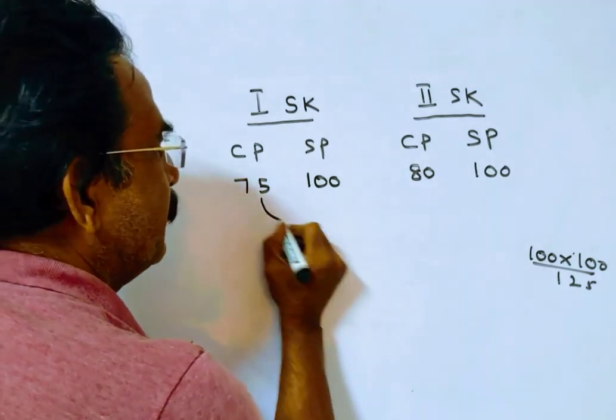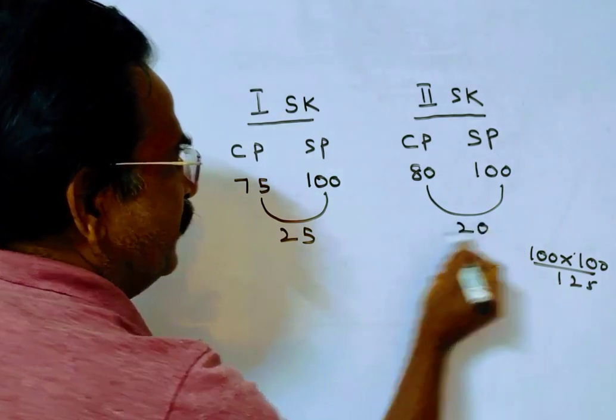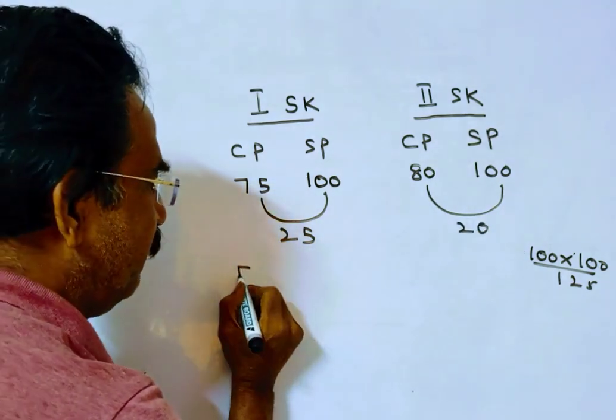Here the profit is 25, here the profit is 20, and the difference between the profits is 5.